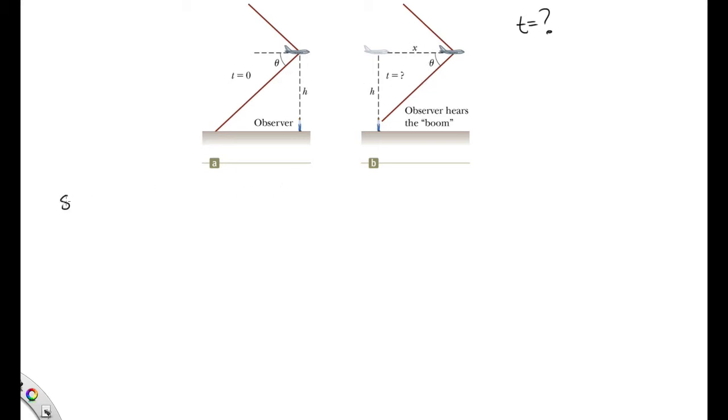We know that sine theta is equal to 1 over the Mach number, which is equal to 1 over 3. So we can use this to work out theta. Theta is equal to 19.47 degrees. That's the inverse sine of this.